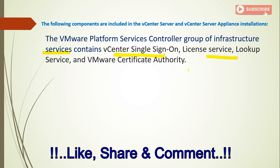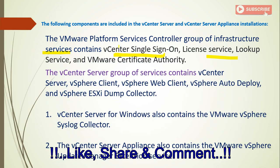I will talk about each one by one in this video. The vCenter server group of services contains: vCenter server, vCenter client, vCenter web client, vCenter auto deploy, and vCenter ESXi dump collector. vCenter server for Windows also contains the VMware vCenter syslog collector, and the vCenter server appliance also contains the VMware vCenter update manager extension.